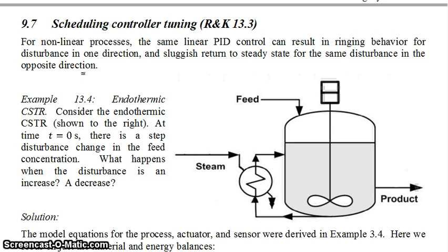So as an example, consider this endothermic CSTR which we've already talked about in class. Imagine that at time t equals zero seconds there is a step disturbance change in the feed concentration. So you have your feed concentration here, CA feed. I'm going to call that a function of time because it acts as a disturbance variable and changes at time t equals zero.